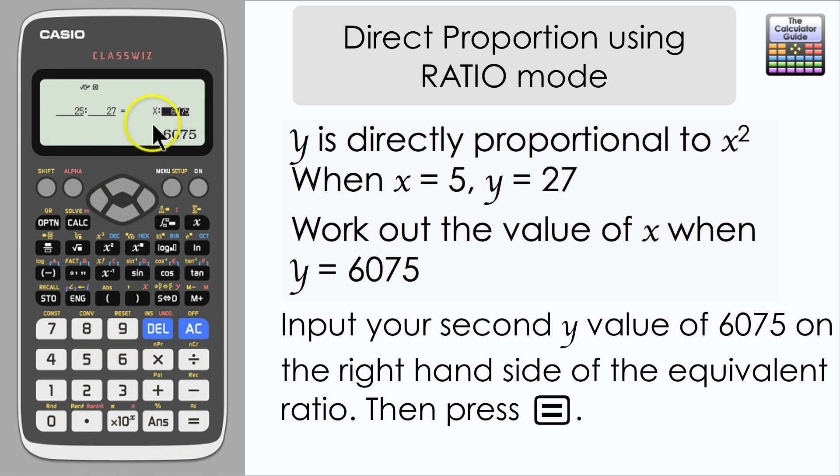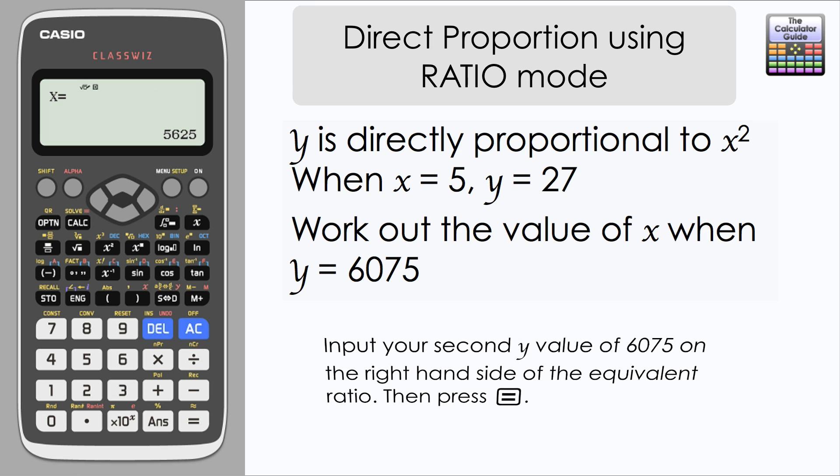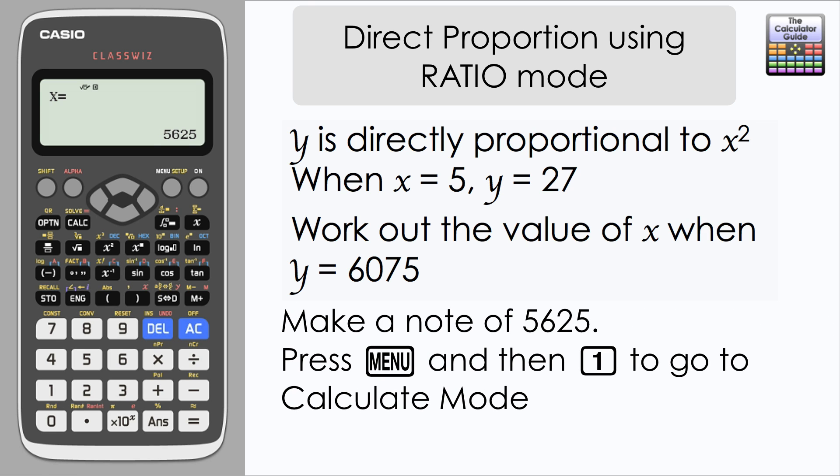We're interested in finding out what the value of x is when y is this value. Press equals and the calculator has given us 5625, and we need to be very careful here. This isn't actually the value of x that we want for our answer. Remember the proportional relationship is between y and x squared, so I'm going to just make a note of 5625.